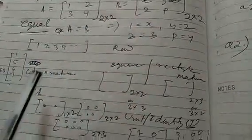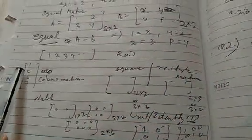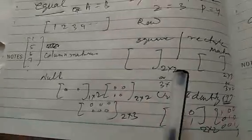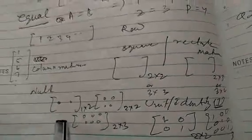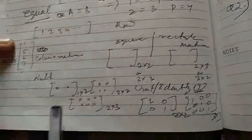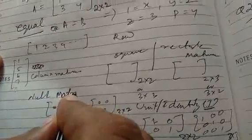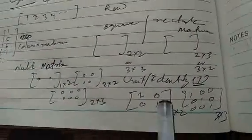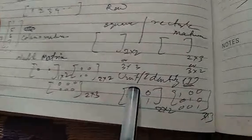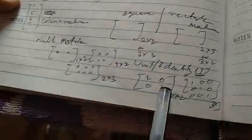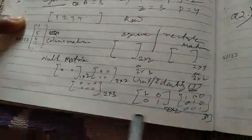If a matrix has only a horizontal row, it is called a row matrix. If a matrix has only a vertical column, it is called a column matrix. If a matrix has all elements equal to 0, it is called a null matrix — having order 1 into 2, 2 into 2, 2 into 3, etc. Similarly, a matrix having all diagonal elements equal to 1 and all others 0, such as [1,0 / 0,1] or [1,0,0 / 0,1,0 / 0,0,1], is called an identity matrix, normally represented as I.